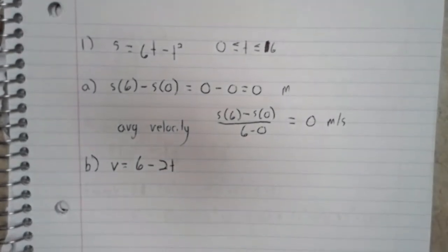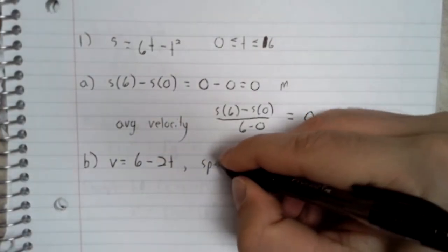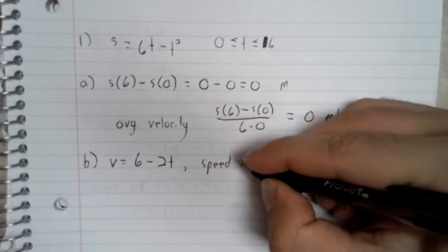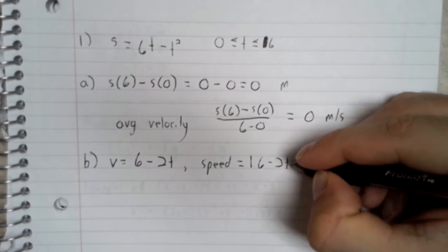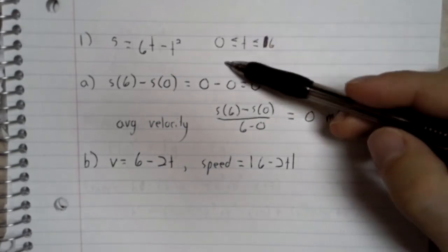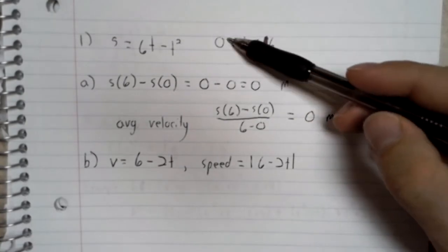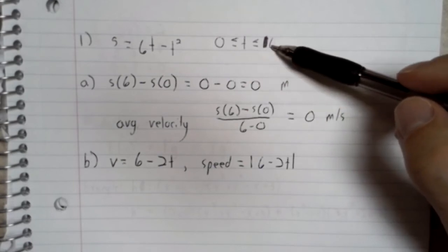And speed, which I don't have a standard letter for, but it's the absolute value of the velocity. This problem isn't asking us for the speed function in general. It's asking us for the speed at the end points, so at 0 and at 6.